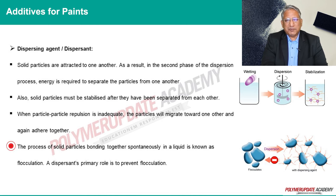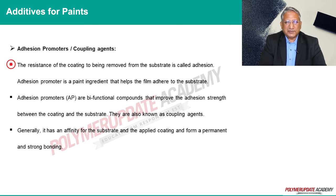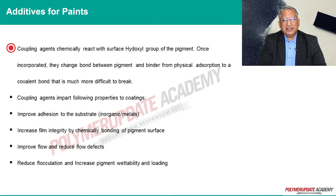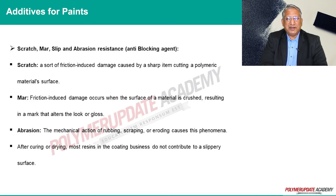The functionality of a dispersing agent is to prevent flocculation. Adhesion promoter or coupling agent: adhesion is the resistance of a coating to be removed from the substrate. An adhesion promoter for paint is an additive to promote adhesion of the film to the substrate. Coupling agents chemically react with surface hydroxyl groups of pigment; once incorporated, they change the bond between pigment and binder from physical absorption to a covalent bond that is much more difficult to break.